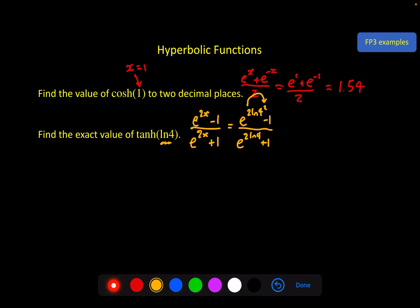And then like I said, e and natural log they kind of cancel out and you end up with just 4 squared which is 16. So on the top 16 minus 1 and on the bottom is the same expression for the exponential, so it's 16 again plus 1, which gives you 15 over 17.